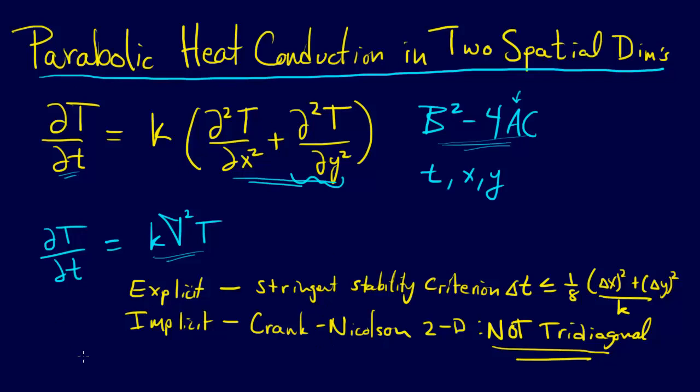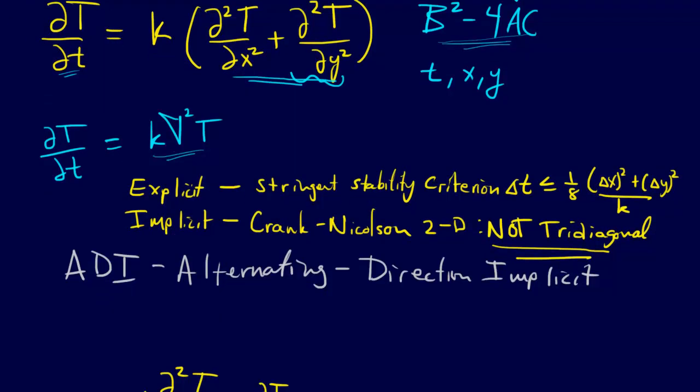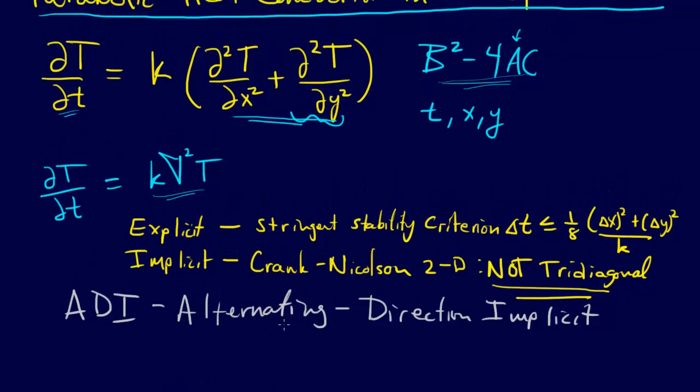Well, the solution that we've come up with is called the ADI scheme, which stands for alternating direction implicit. So right from the name you get the idea that it is an implicit approach. So good, we're sticking with the trusty implicit approach, this alternating direction implicit approach. And the other thing that we need to know about this is this alternating direction business.